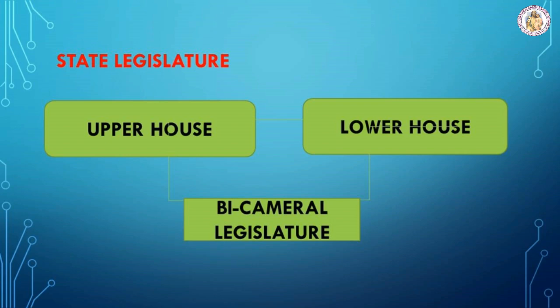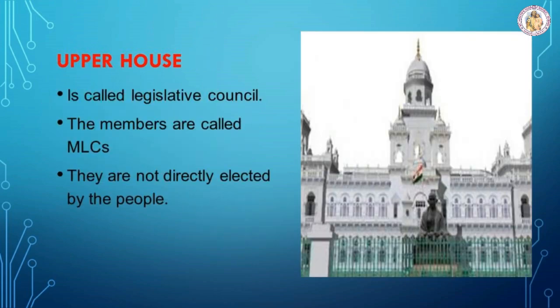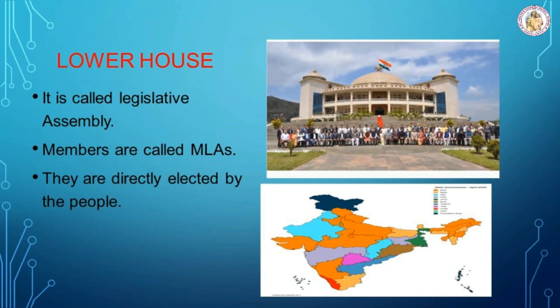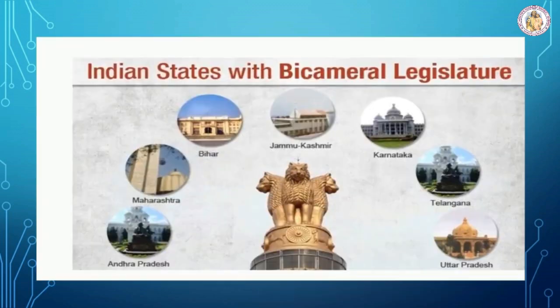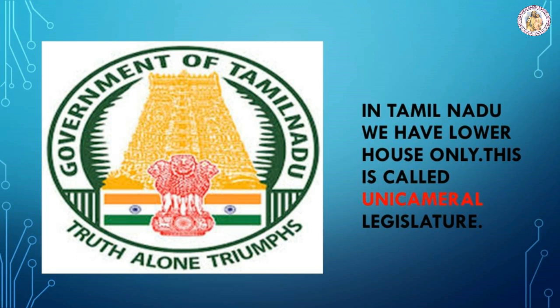Usually, a state legislature has two houses: the upper house and the lower house. This is called a bicameral legislature. The upper house is called the legislative council. The members are called MLCs and they are not elected directly by the people. In India, some states have two houses in their state legislature. But in Tamil Nadu, we have the lower house only. This is called a unicameral legislature.